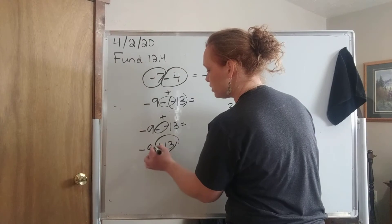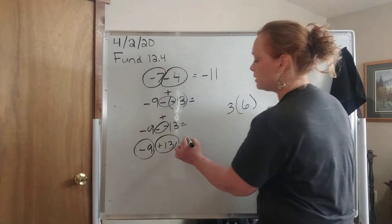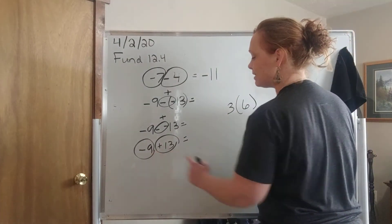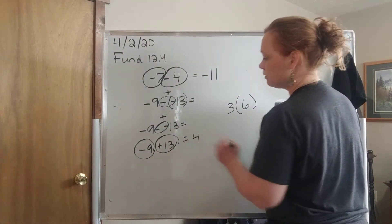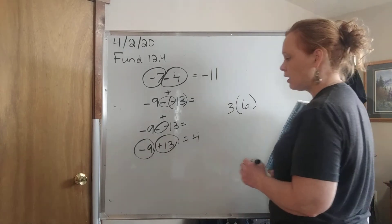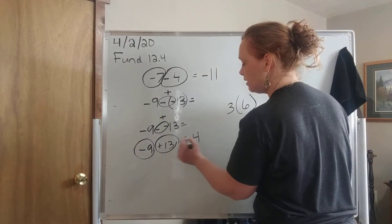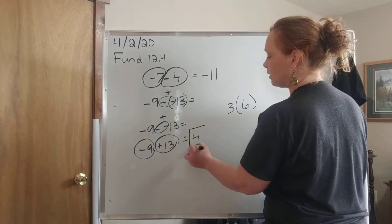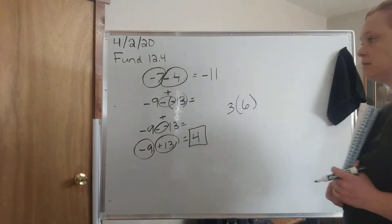And then I'm going to circle the two numbers that I'm going to be combining. They have different signs. So I'm going to subtract 13 minus 9 equals 4. And then I keep the sign of the bigger number. So positive 4 is my answer.